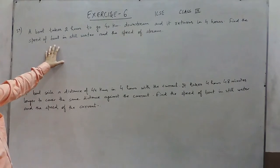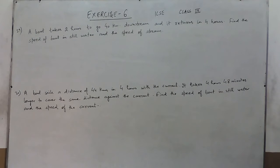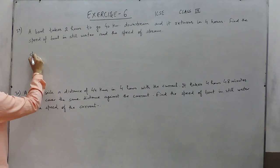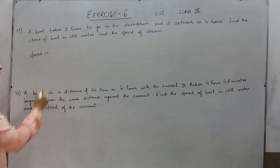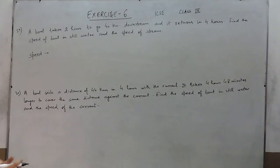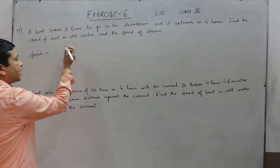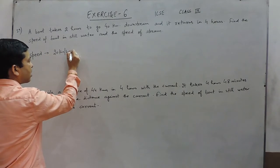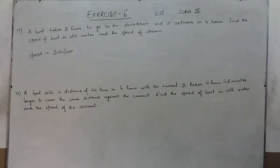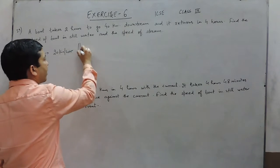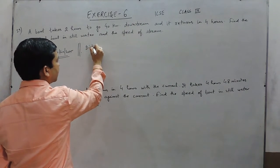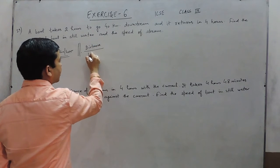Hello everyone. Question number 29 and question number 30 are the same, that is why I am solving them together. It is very clear that speed in any question can be given in two formats. One is where it is directly given as 20 km per hour, 25 km per hour, or 30 km per hour. Another format is when the speed is given in the format of distance and time.